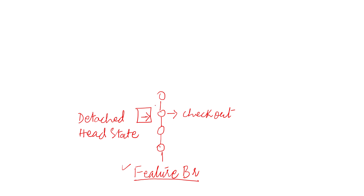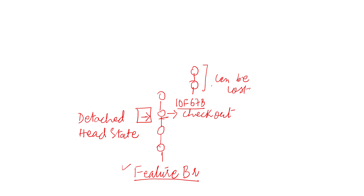When the HEAD pointer is not pointing to the latest commit, it is also not giving us the information of the branch. If we make any commit in this state, there is a possibility that these commits can be lost. To preserve these commits, we should create a branch. With the help of GitKraken, I will show you how it works.